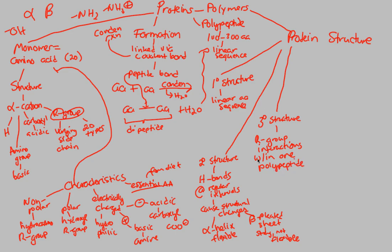Because remember, a polypeptide is 100 to 300 amino acids. These 100 to 300 amino acids are going to be formed in a linear sequence.